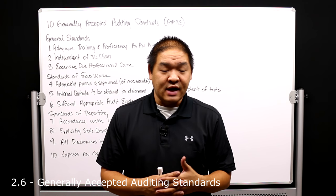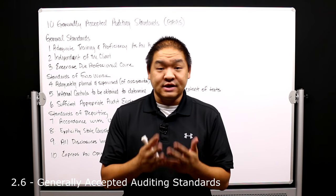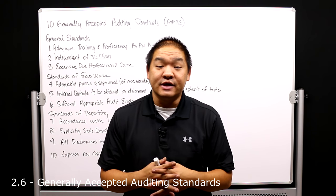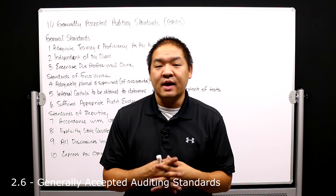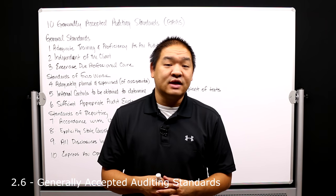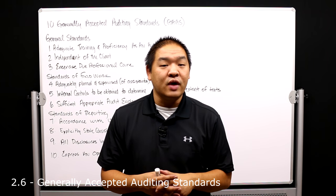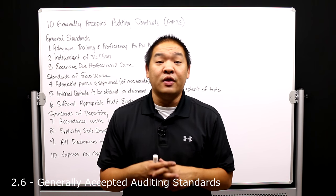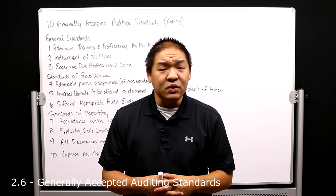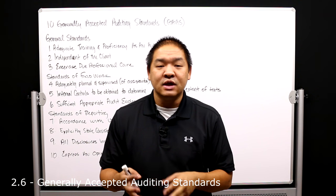Generally Accepted Auditing Standards were put in place by the Auditing Standards Board, but have since changed because of the formation of the PCAOB — the Public Company Accounting Oversight Board. With the formation of the PCAOB, they decided they wanted a vested interest in auditing standards and started creating their own auditing standards based on what they perceived as important for public company audits. So we now have two types of GAAS: the PCAOB's type and the ASB's type.